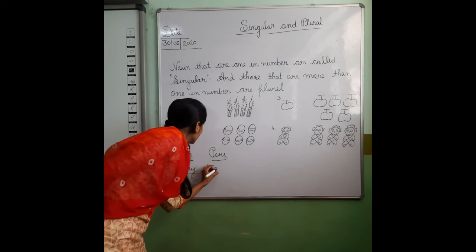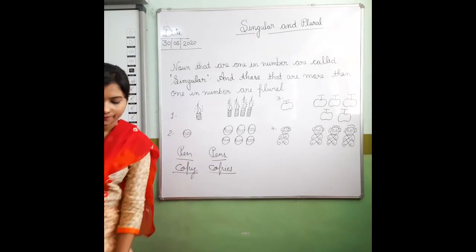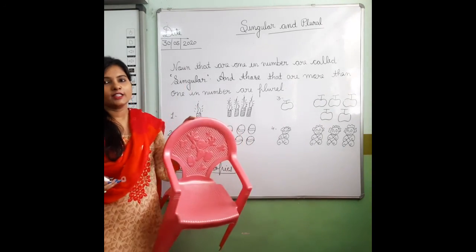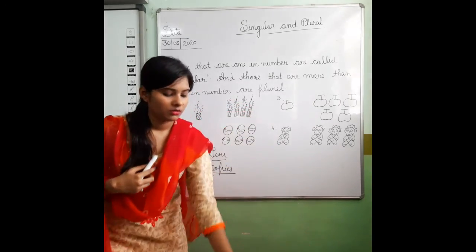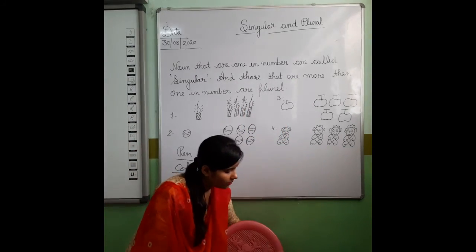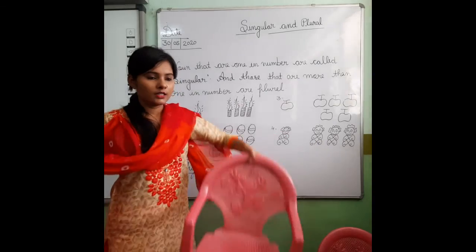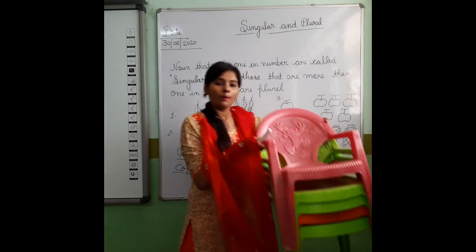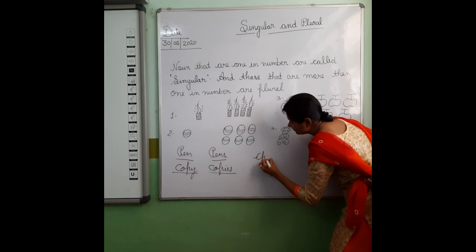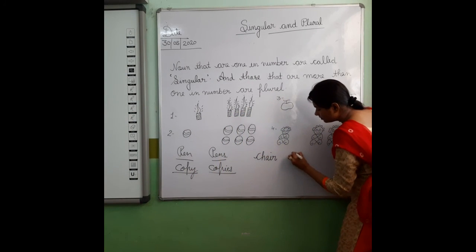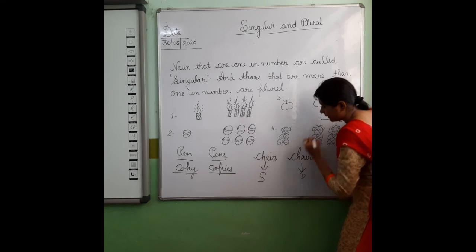Now copy is more than one in number. Same as — see everyone — this is a chair. Count it. How many chairs are there? Only one — that is singular number. And more than one in number is plural number. Chair is singular; chairs is plural.